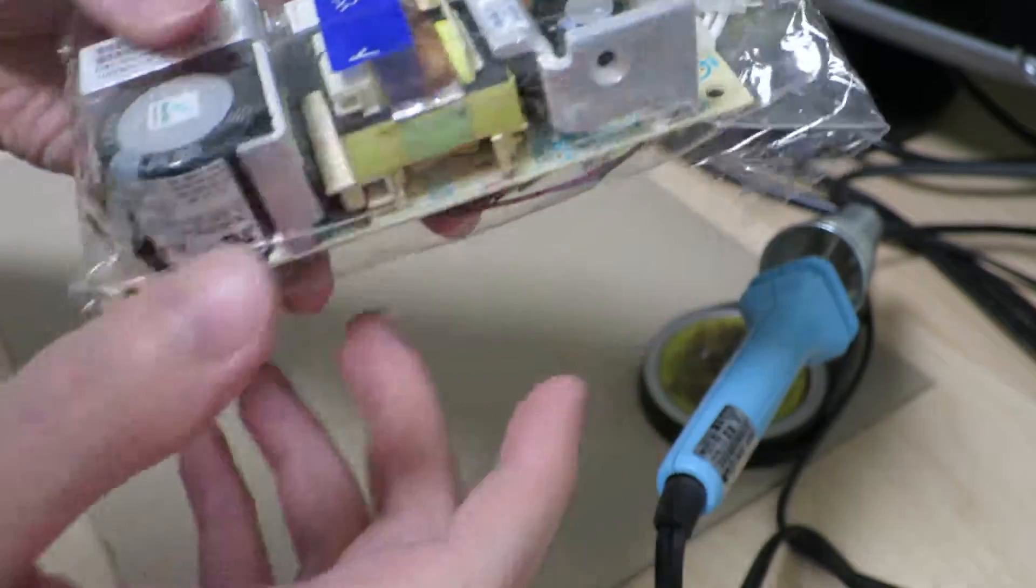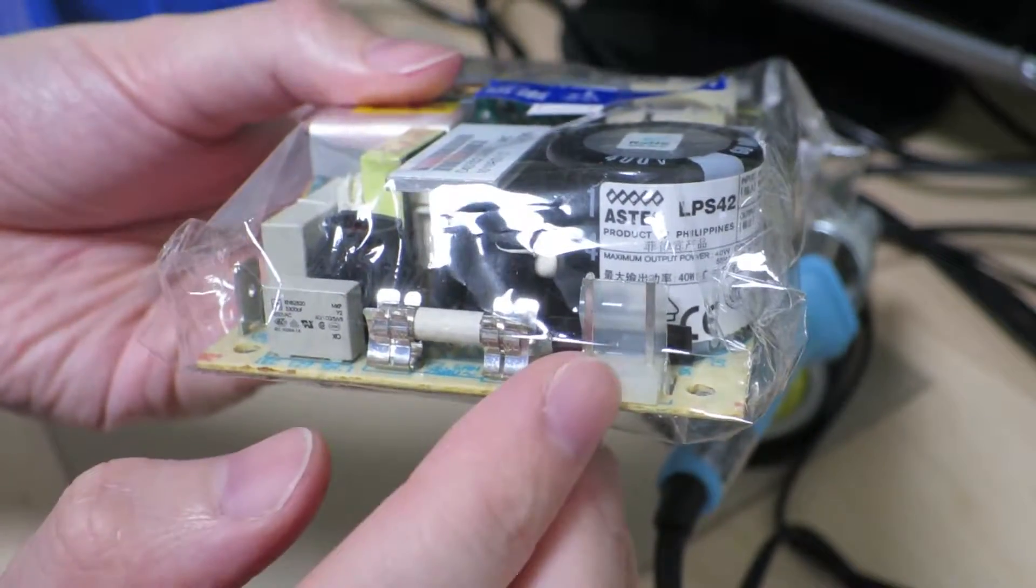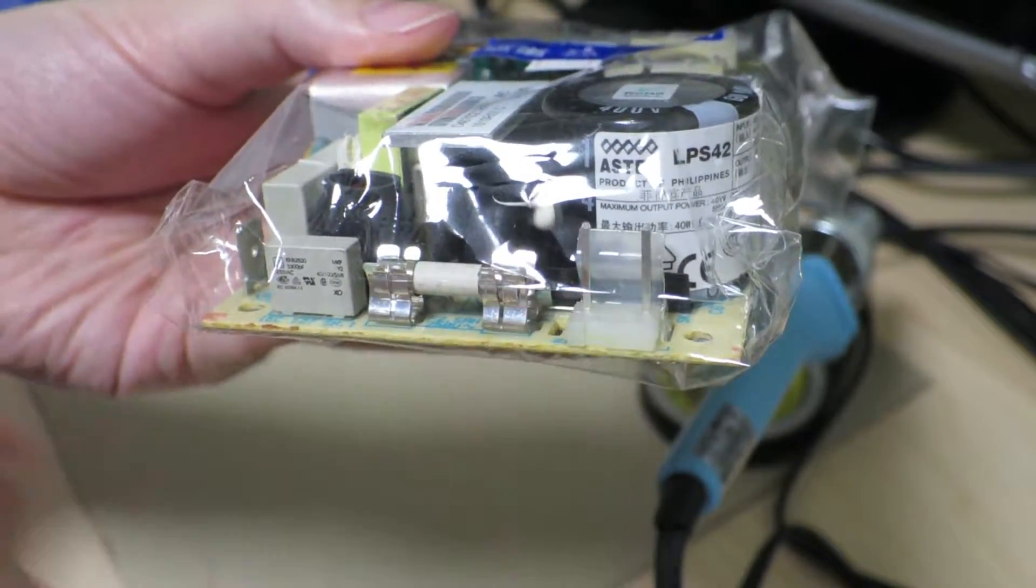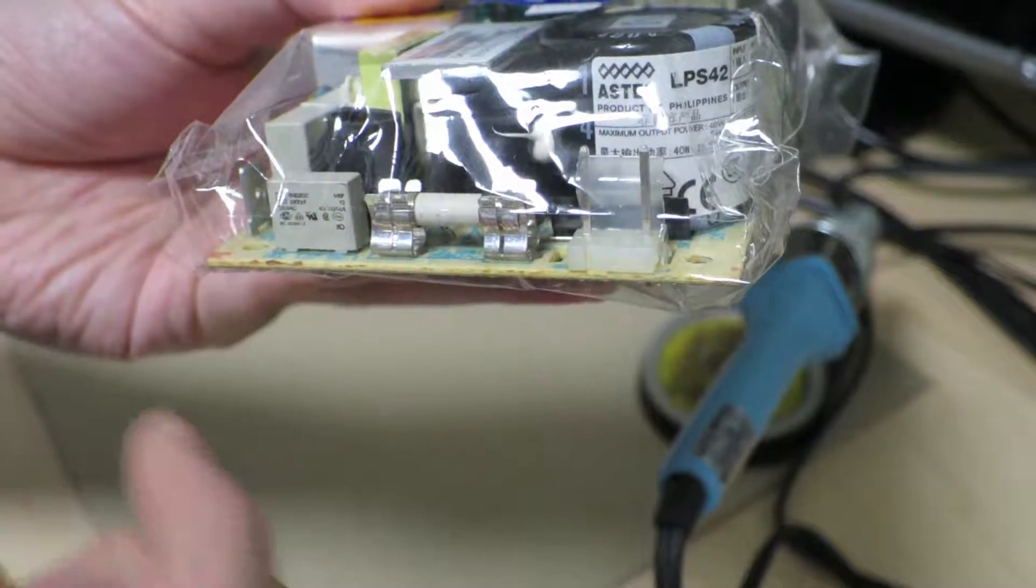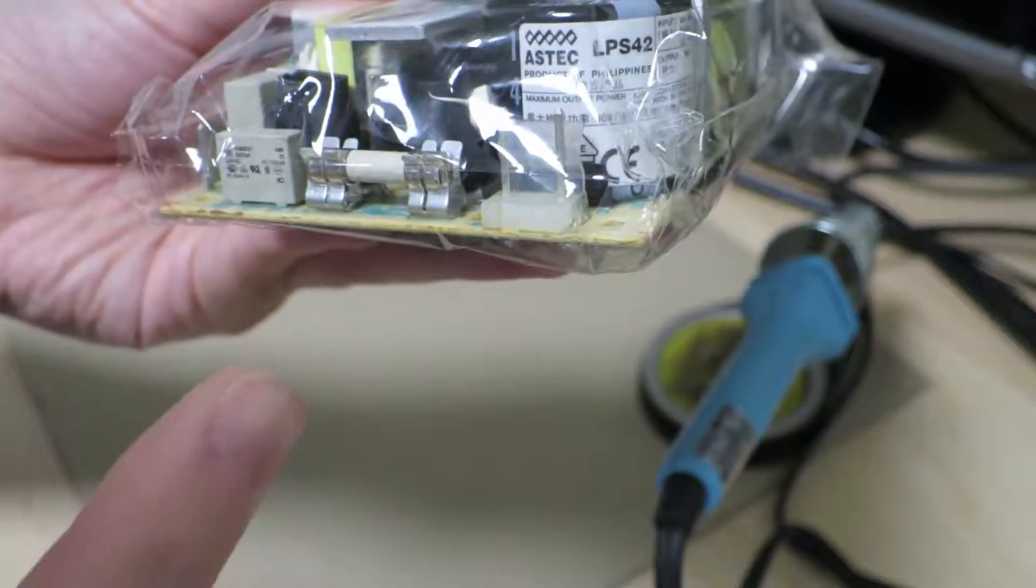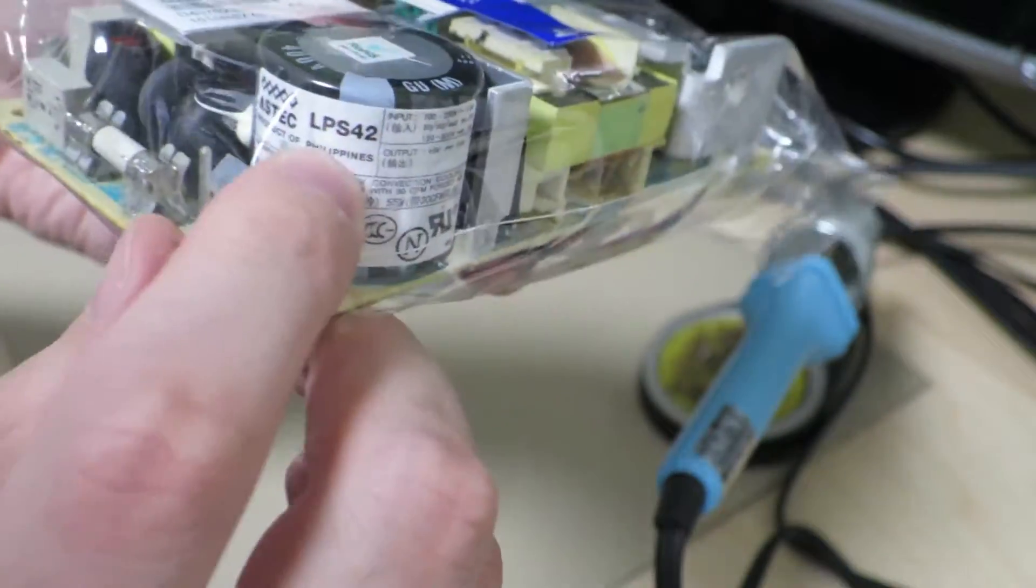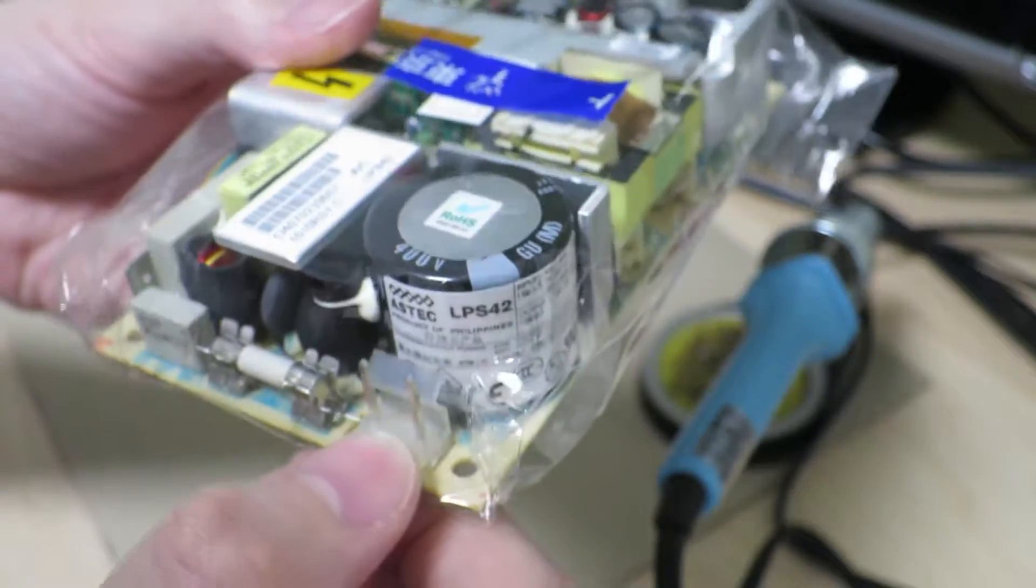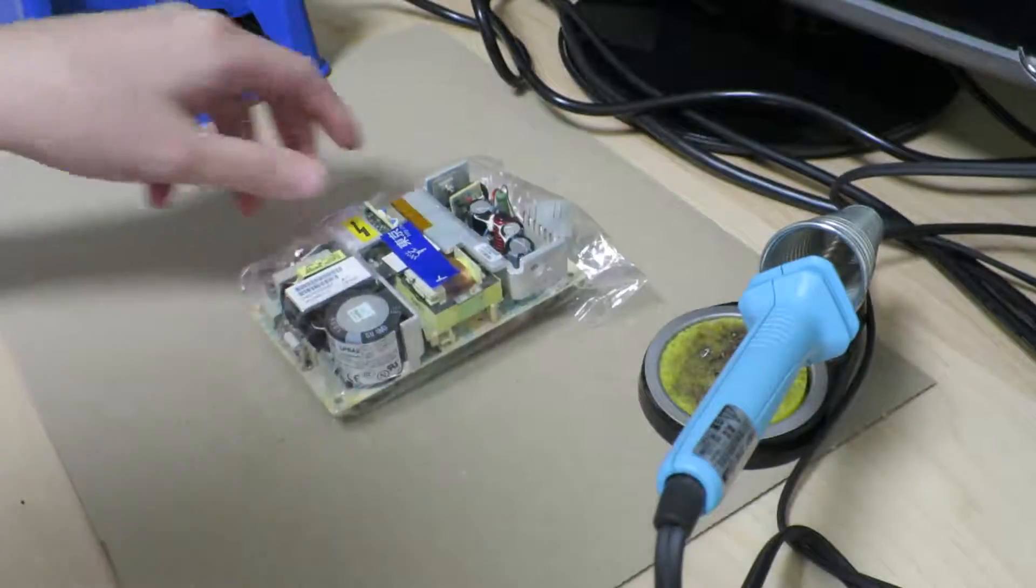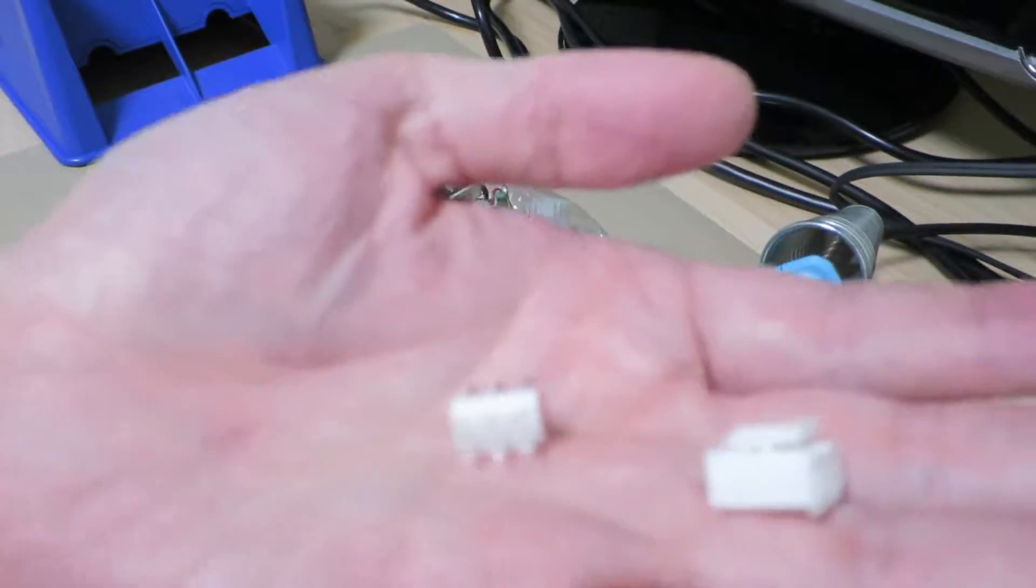What I'm gonna do is, since this power terminal is something that I don't have handy on me, I'm gonna replace it with something that I have on hand, such that I can get some cables connected to this. So apparently this power terminal that comes standard with the LPS42 is some type of Molex connector, and what I happen to have handy are these JST terminals.